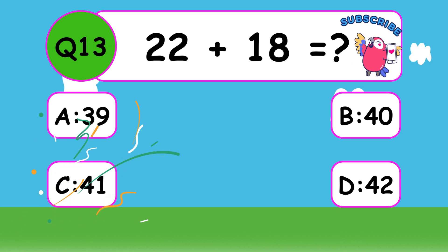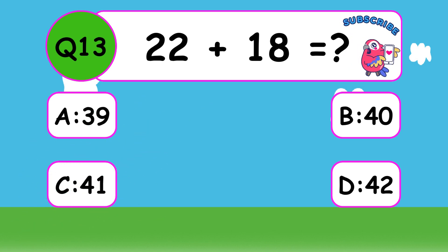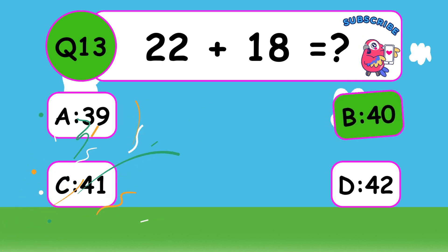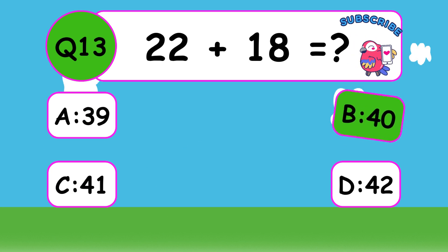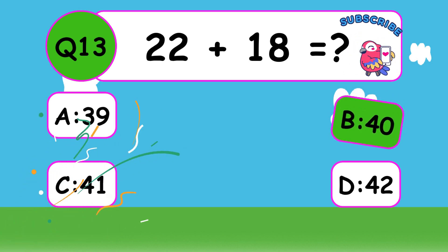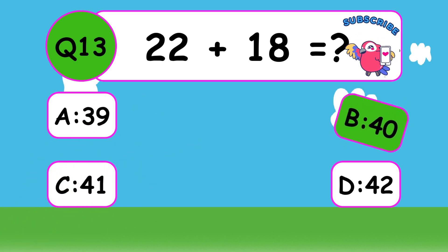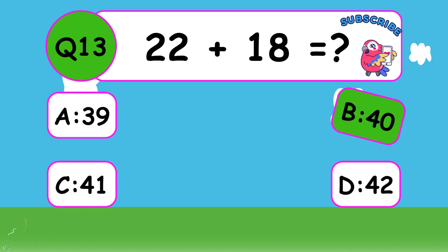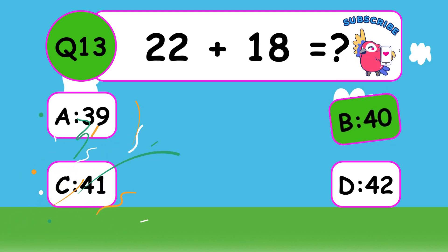What is 22 plus 18? The correct answer is B, 40. 22 plus 18 equals 40.